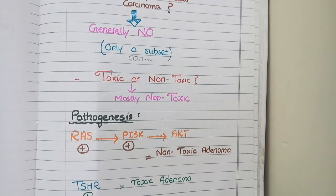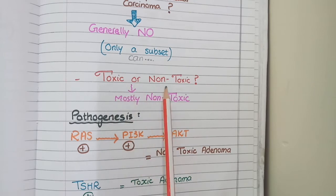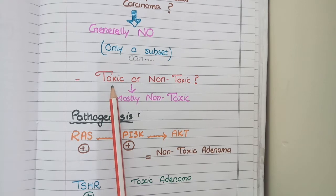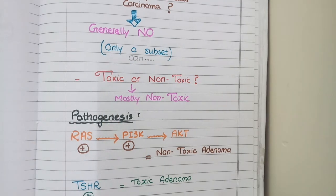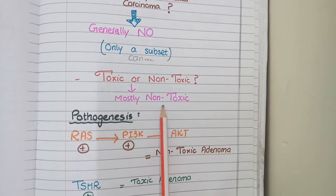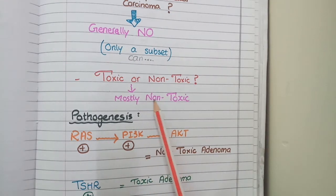Another important question is whether follicular adenoma is a toxic or non-toxic nodule. In thyroid terminology, a toxic nodule produces a lot of thyroxine hormone, while a non-toxic nodule does not. Follicular adenomas are generally non-toxic, meaning they do not produce thyroxine hormone.